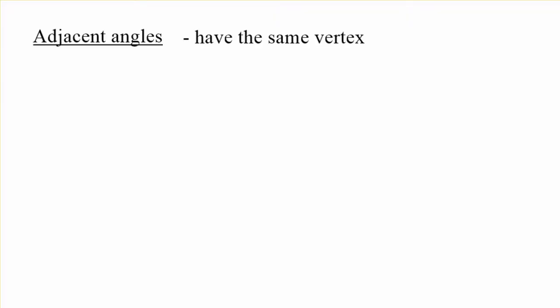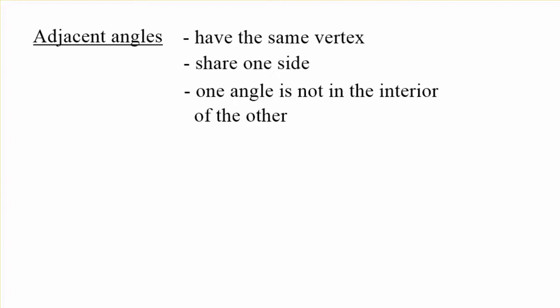Well, adjacent angles are a pair of angles that have the same vertex. They share one side and one of the angles is not in the interior of the other.